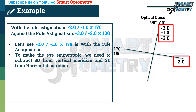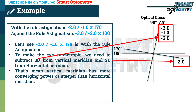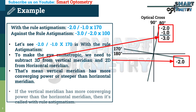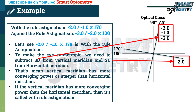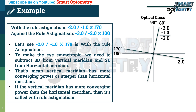To make the eye emmetropic or zero power, we need to subtract 3 diopters from the vertical meridian and 2 diopters from the horizontal meridian. That means the vertical meridian has more converging power, or is steeper, than the horizontal meridian. As we already know, if the vertical meridian has more converging power than the horizontal meridian, then it is called with the rule astigmatism. So minus 2, minus 1 at 170 degree axis is a with the rule astigmatism.